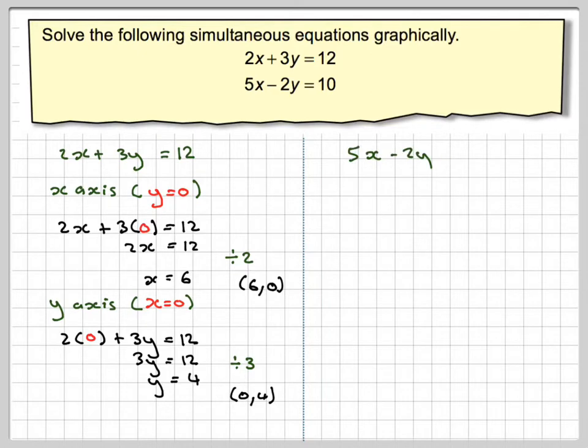Repeating the process for the other line, 5x minus 2y equals 10. For the x-axis, y equals 0. We get 5x minus 2 times 0 equals 0. 2 times 0 is 0, so we have 5x equals 10.